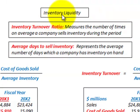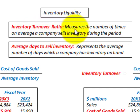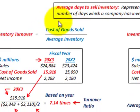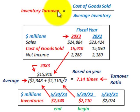What we're going to be going over here is inventory liquidity. There are two items that we use to measure the liquidity of our inventory: first, the inventory turnover ratio, which measures the number of times on average the company sells inventory during the period, and second, the average days to sell the inventory. We'll start with the inventory turnover ratio, which is defined as cost of goods sold divided by average inventory.